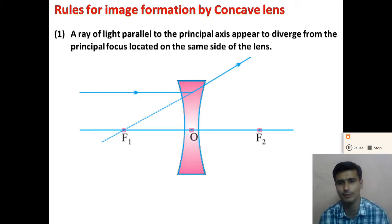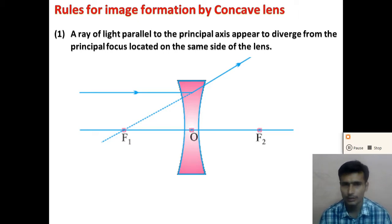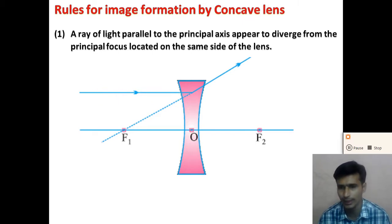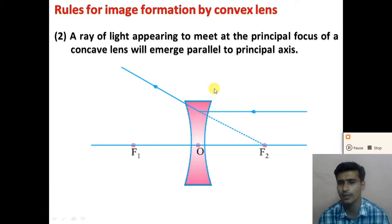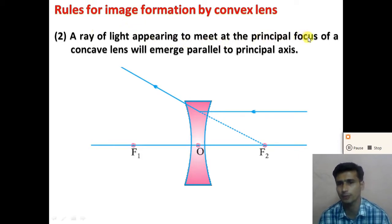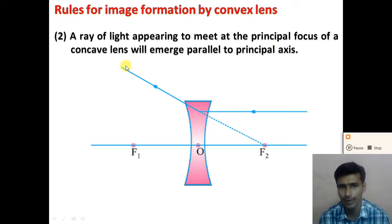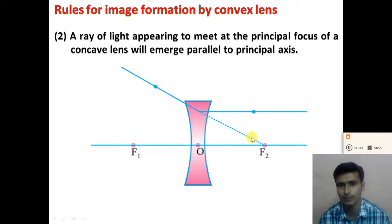When a ray of light passes parallel to the principal axis, it will be diverted such that it will appear to come from the first principal focus. The second rule is exactly the inverse of the first rule: when a ray of light appears to meet at the principal focus of a concave lens, it will emerge parallel to the principal axis. If we consider a ray of light incident on the concave lens such that it appears to pass from the second principal focus...